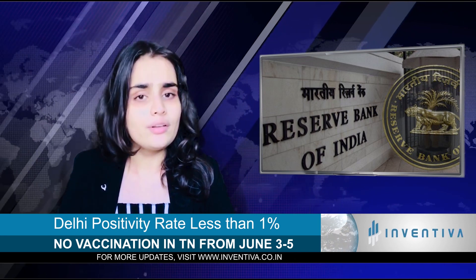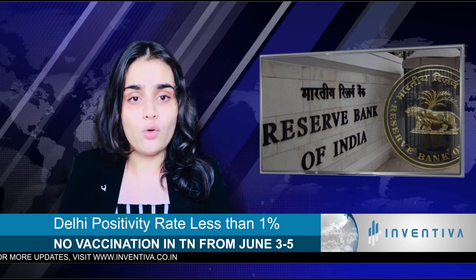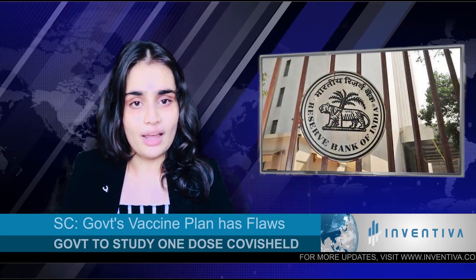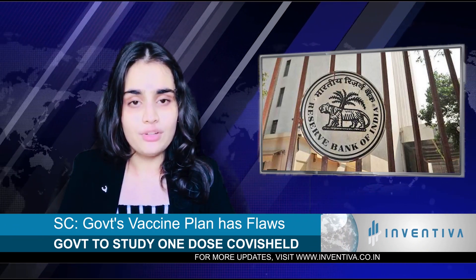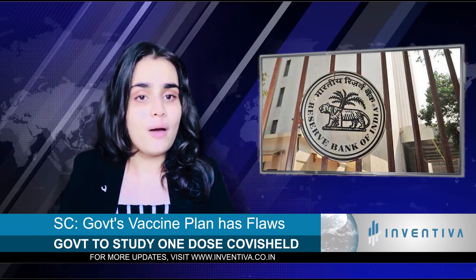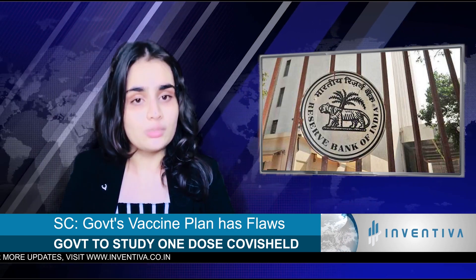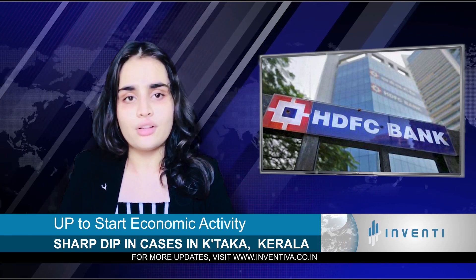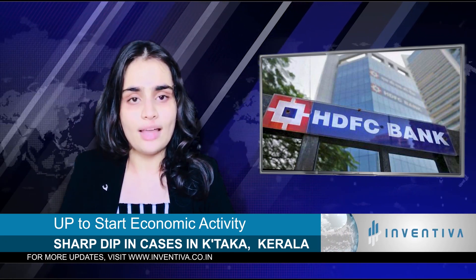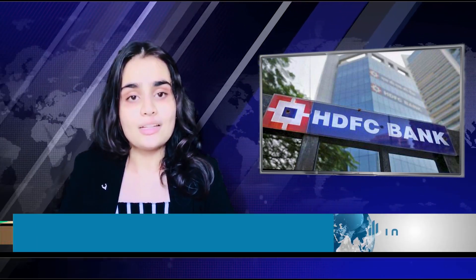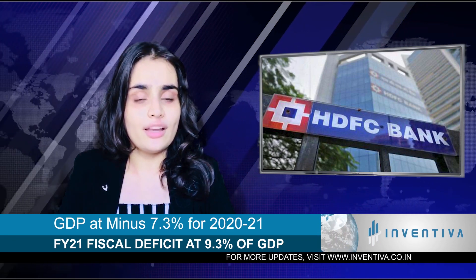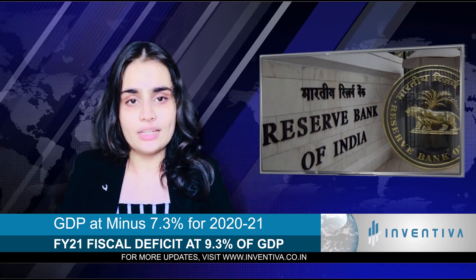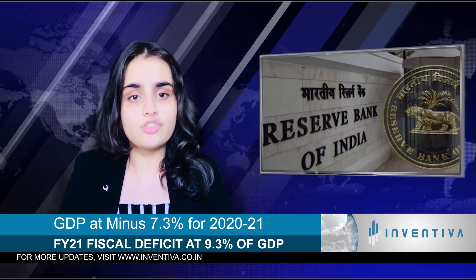When the Reserve Bank sees that the economy has enough money supply and it may lead to an inflationary situation, it has the power to reduce the money supply through its monetary policy, and vice versa. The RBI also performs many other functions, including representing India and acting as the government's representative in the International Monetary Fund, IMF.